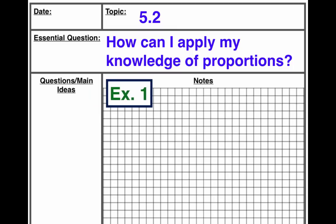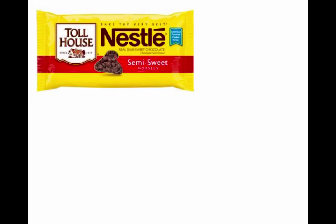We're going to do an example — I'm going to call it Example One. Before we start, we're going to talk about what it's going to be about. Hopefully you've had some experience with chocolate chip cookies. When you go to the store, you can buy bags of chocolate chips, and there are all different types.